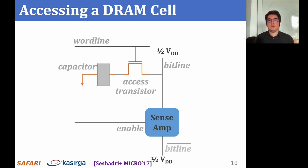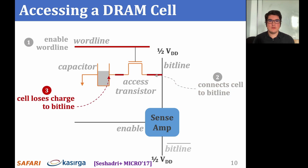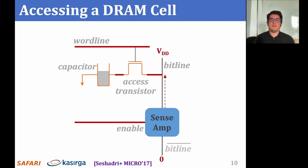Initially, both the access transistor and the sense amplifier are disabled, and both ends of the sense amplifier are maintained at half VDD. In this example, the capacitor is fully charged. To access the cell, we first enable the wordline, which connects the cell to its bitline. Since the capacitor has a voltage level higher than the bitline, charge starts flowing from the capacitor to the bitline, resulting in the bitline voltage deviating slightly towards VDD. When we enable the sense amplifier, it will compare the voltage levels of bitline and bitline bar, and amplify the deviation until bitline voltage reaches VDD. Since the capacitor is still connected to the bitline, the amplification process also restores the charge in the capacitor.